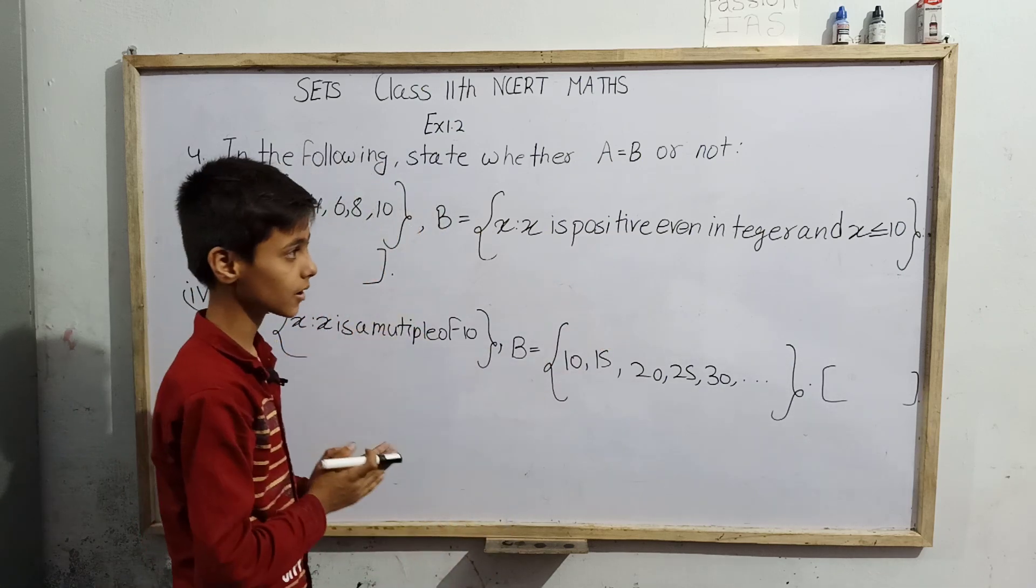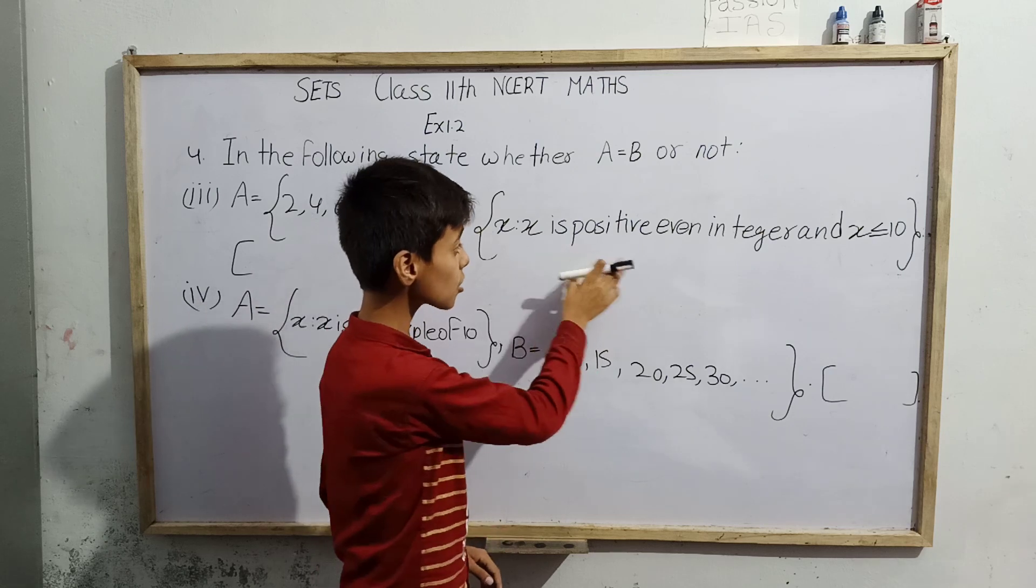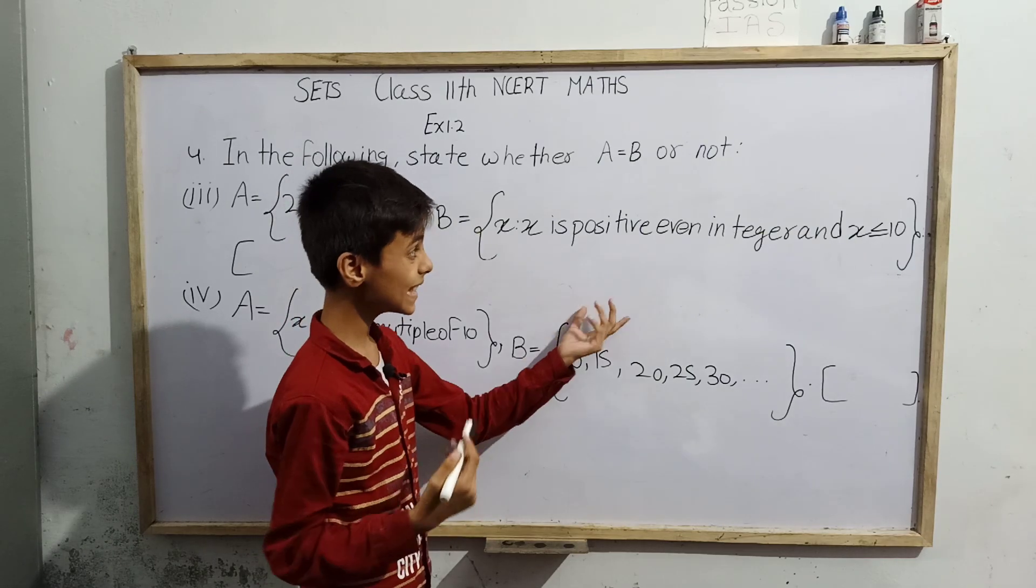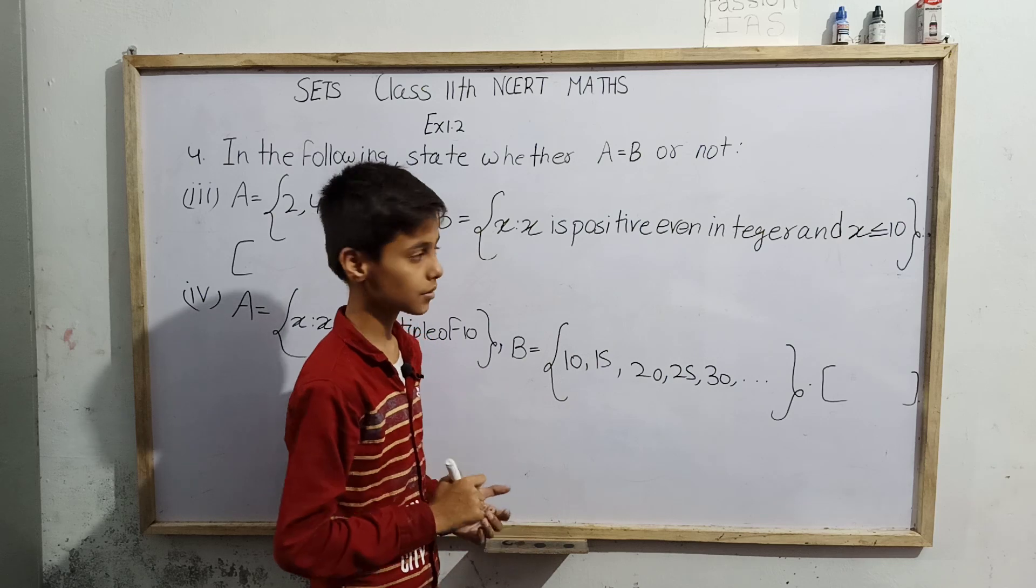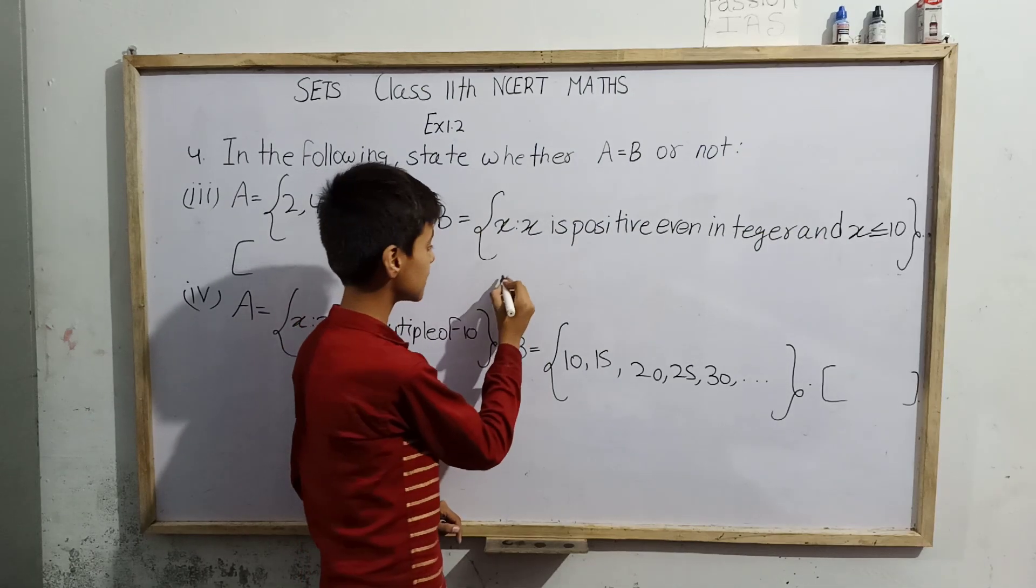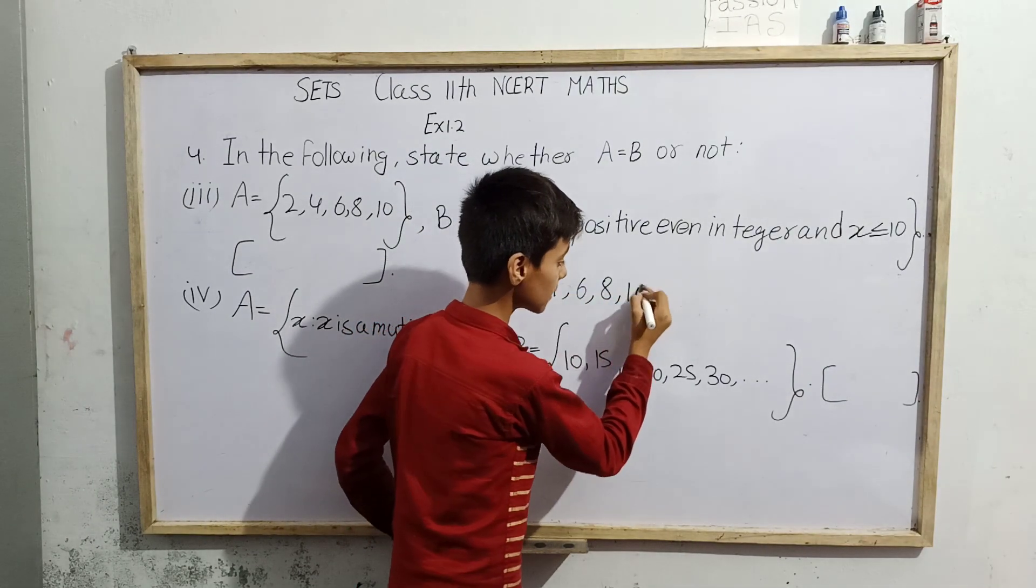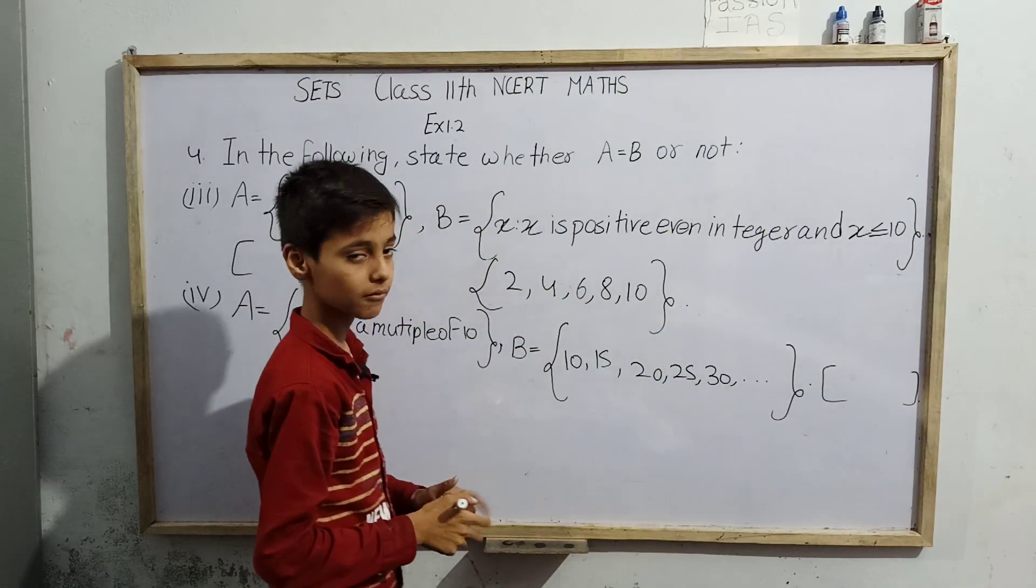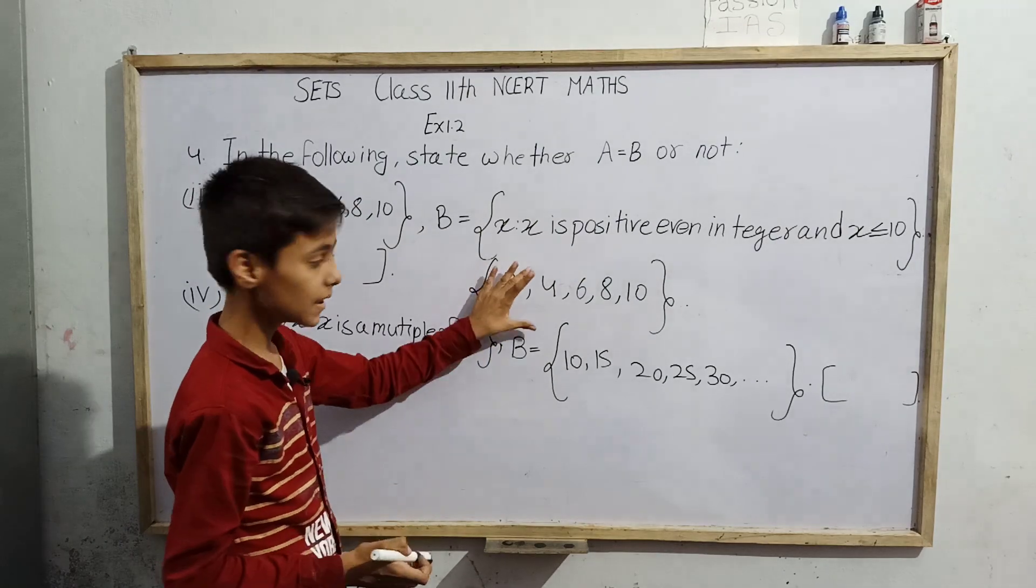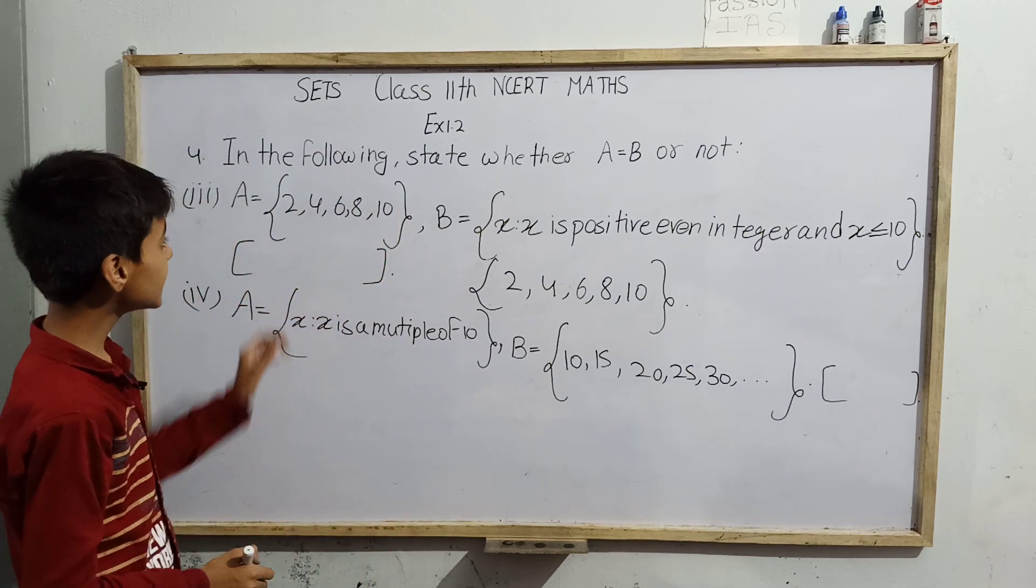If we write B in roster form, the elements are positive even integers. They will be positive first, no negative symbol. Next, they will be even, means divisible by 2, and they all will be less than or equal to 10. So positive even integers are 2,4,6,8,10. They can equal 10 and be less than 10, not greater than 10 and not less than 2, because less than 2 would give negative integers. So here we have 2,4,6,8,10 and in set A also we have 2,4,6,8,10.